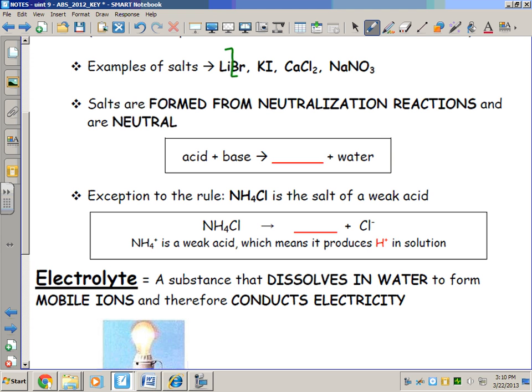Some examples of salts: LiBr, KI, CaCl2, NaNO3. The first three are group one and two metals with halides, and the fourth example has a group one metal with a polyatomic. You can see there's no OH- or H+ present in the formula.